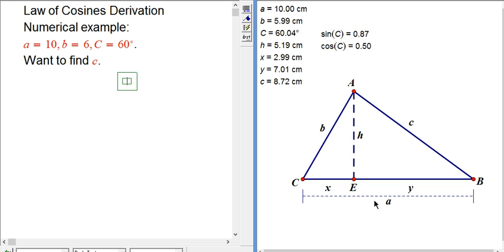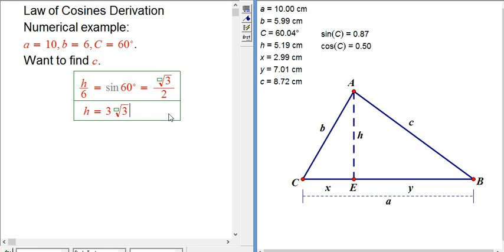So the first thing we can do is find the height of that triangle, or the length of that side that's common to the two right triangles. So h over 6, opposite over hypotenuse, is sine of 60 degrees. That happens to be a nice number, and so h is 3 root 3. If you want the decimal, it's about 5.19.